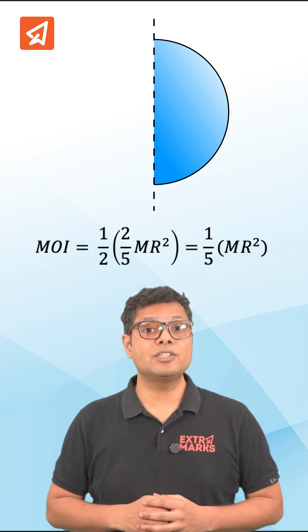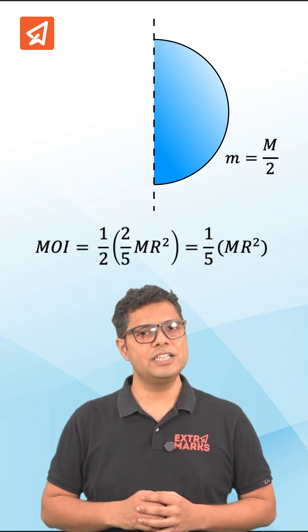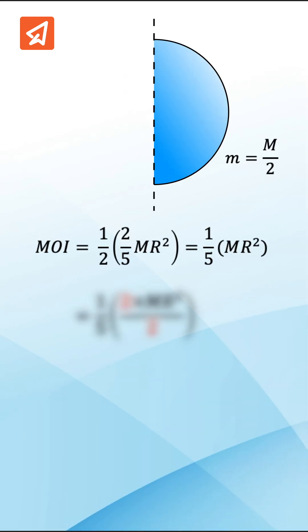here m is the mass of the complete sphere. So the mass of the hemisphere small m is equal to capital M by 2. Now, if we multiply and divide the expression by 2 and substitute capital M by 2 equal to m, then we get the same expression that is 2 by 5 m r square.